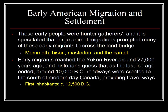As time goes on and the Ice Age ends, climatic change forced many of these hunter-gatherers to become less nomadic and develop forms of agriculture. These early migrants reached the Yukon River around 27,000 years ago. As the last Ice Age ended around 10,000 BC, roadways were created to the south of modern-day Canada. It is estimated that the first inhabitants of North America settled there approximately 12,500 BC, based on archaeology, carbon dating, and historiographical work. There's no hard and fast date because they left no written records.